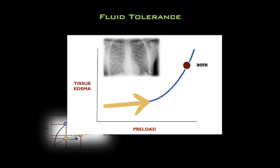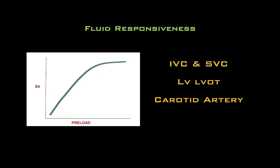Let's start off by discussing fluid responsiveness. This is the relationship between preload and stroke volume — the idea being that a fluid responsive patient will generate a higher stroke volume when intravenous fluid is administered, which may improve their shock state and oxygen delivery. In the literature, a 10% increase in stroke volume in response to a half litre bolus is generally described as volume responsive. During this screencast, I will briefly cover the utility of dynamic indices including IVC and SVC indices, stroke volume variation, and variations in carotid artery hemodynamics.